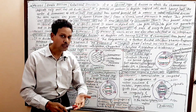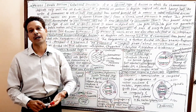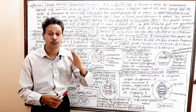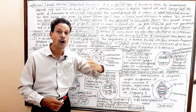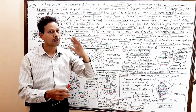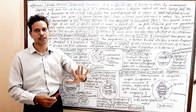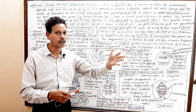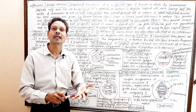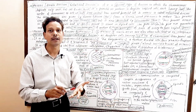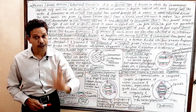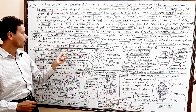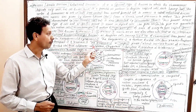In the case of meiosis, prophase one is very complicated and it is the longest phase. This prophase one is divided into five sub-stages: leptotene, zygotene, pachytene, diplotene, and diakinesis — five sub-stages of prophase first, which is the longest and most complicated process.